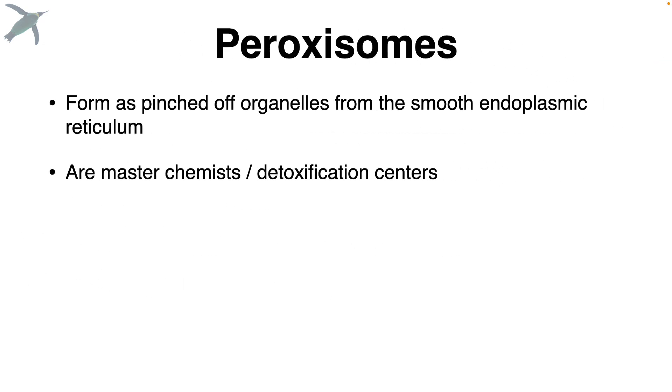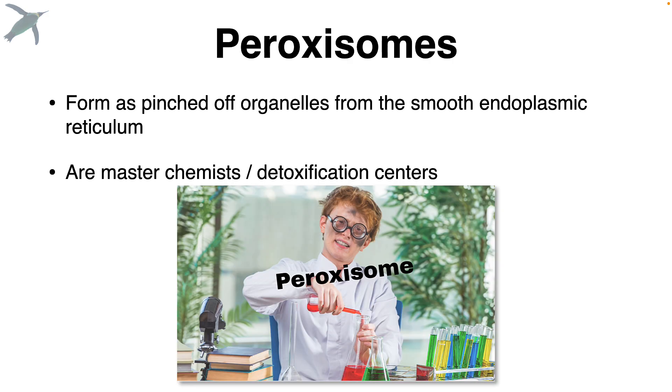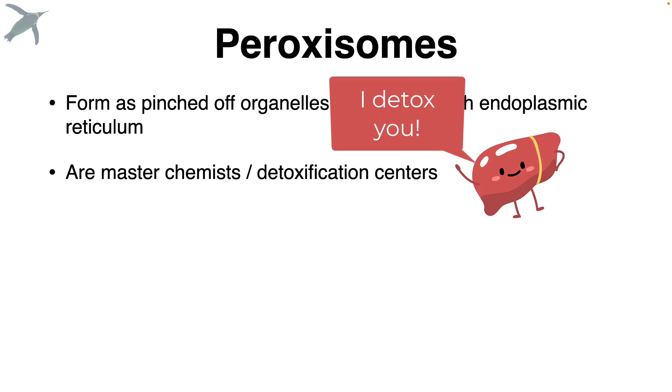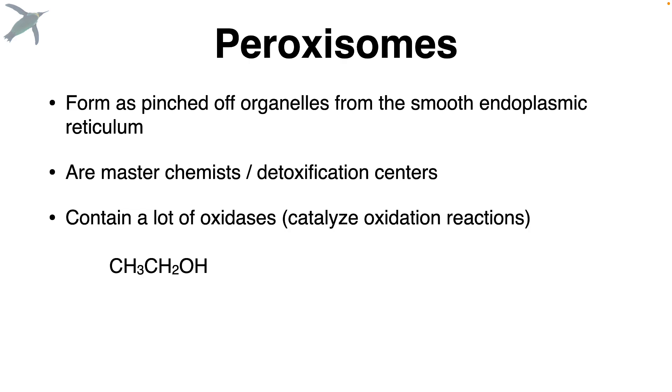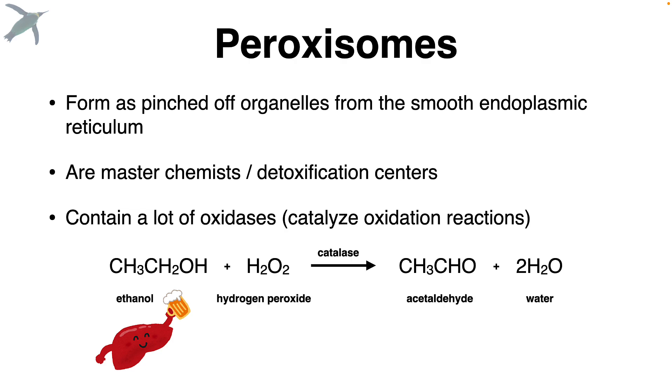Now peroxysomes form as pinched off organelles from smooth ER. And they are master chemists. And they're responsible for a lot of our detox reactions. So they're really abundant in places like the liver. Peroxysomes contain a lot of oxidases, so they catalyze oxidation reactions. Do you recognize this? That's ethanol. Some of you may have experienced ethanol. And when you consume ethanol, peroxysomes will take it and combine it with hydrogen peroxide. And that forms acetaldehyde and water.